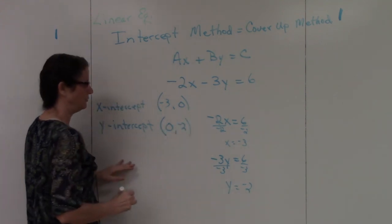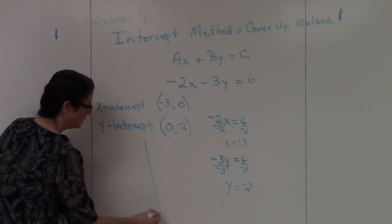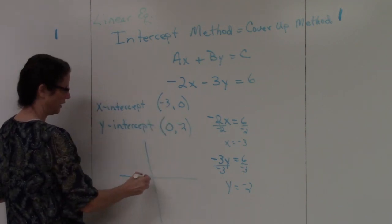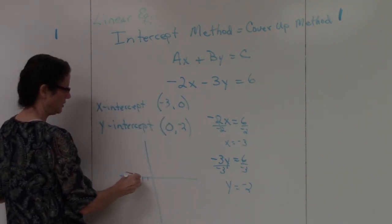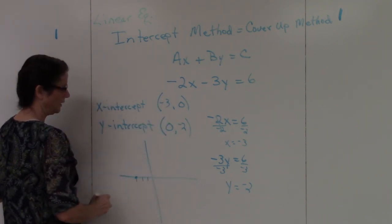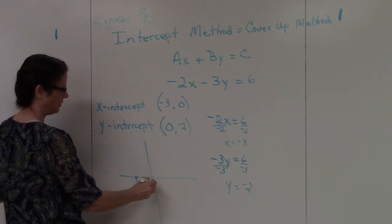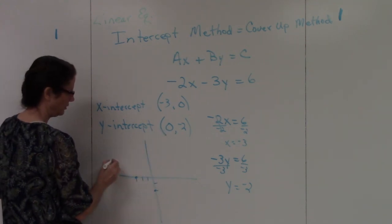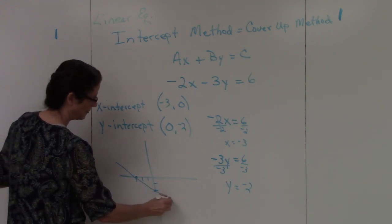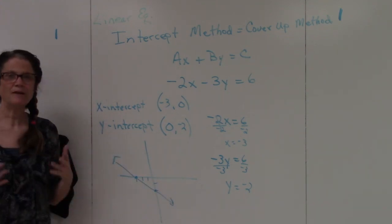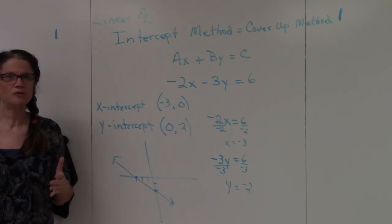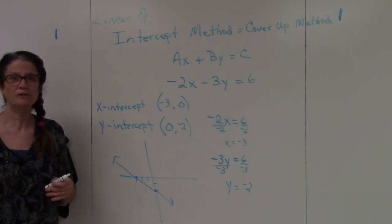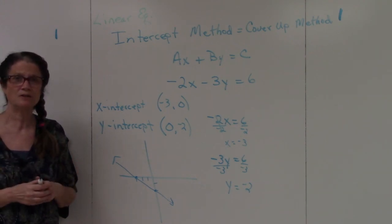Dividing both sides by negative 3, I get y equals negative 2. Now to graph it, I plot my points: negative 3 on the x-axis, and negative 2 on the y-axis. Connect them and there's my line. That's all it is — the cover-up method. It works great and you'll get very used to it because we use it quite a bit in our applications.